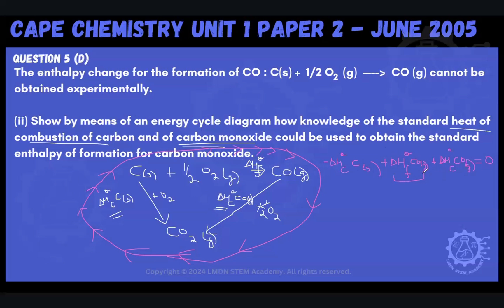And so I'm going to isolate. I'm going to make this my subject. And when I do that, I'll have that delta H of formation theta of carbon monoxide gas is going to be equal to, I'm going to bring this one over to this side of the equal sign and it will become plus because it was minus. So it'll be delta Hc theta carbon solid. And then I'll bring this over which was plus, so it will become minus delta Hc theta of carbon monoxide gas.